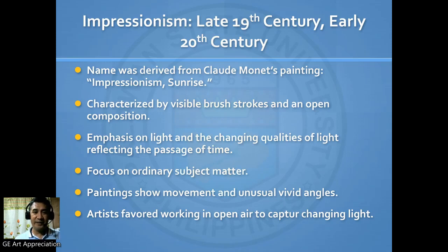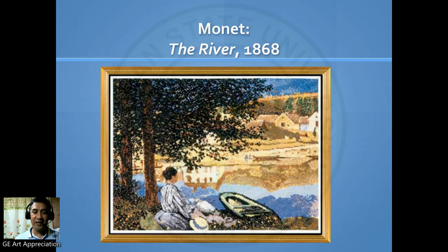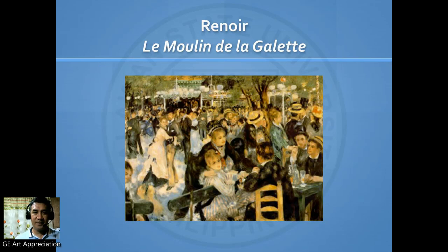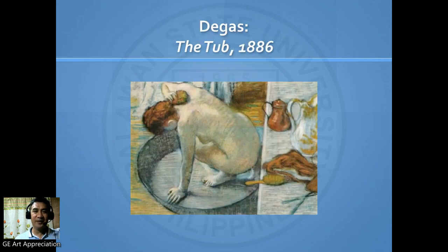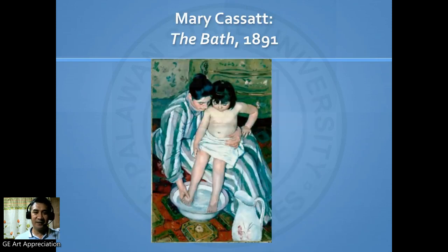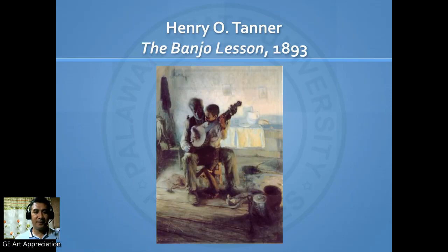We also have Impressionism in the late 19th to early 20th century. It was derived from Claude Monet's painting Impression, Sunrise. Here we have Monet's The River in 1868, Renoir, Rodin's The Thinker from 1879 to 1880, Degas's The Tub in 1886, Mary Cassatt's The Bath in 1891, and Henry O. Tanner's The Banjo Lesson in 1893.